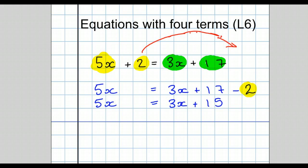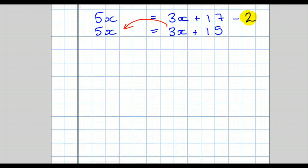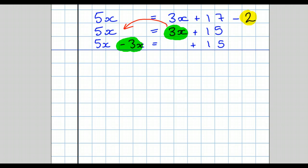What's our second step? We move all the letter terms together. So we write 5x take away 3x equals plus 15. This 3x that was on the right, we've now moved to the left and we take it away. We always take away unless there's a minus sign directly in front. And as we did with the numbers, we now simplify: 5x take away 3x is 2x equals plus 15.